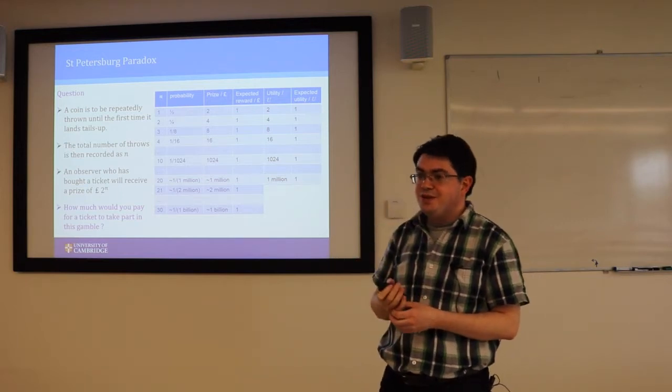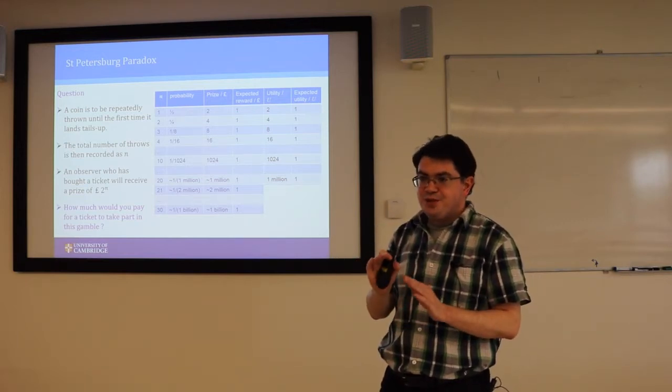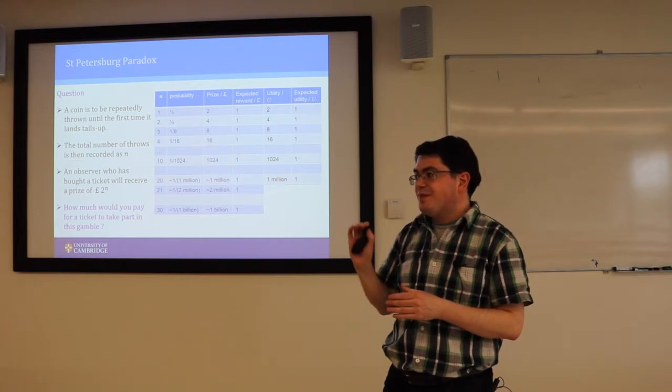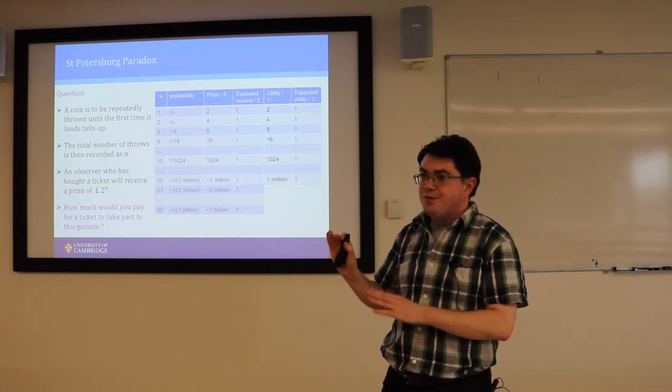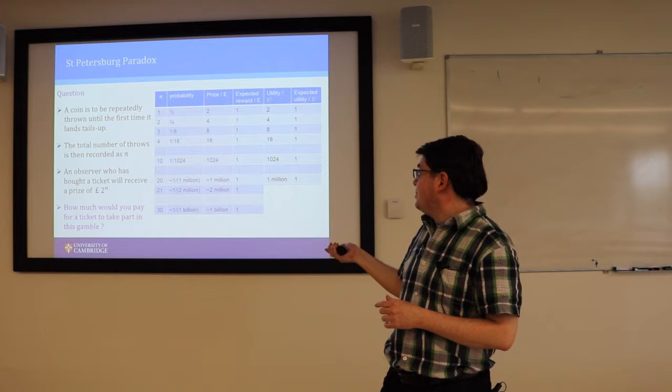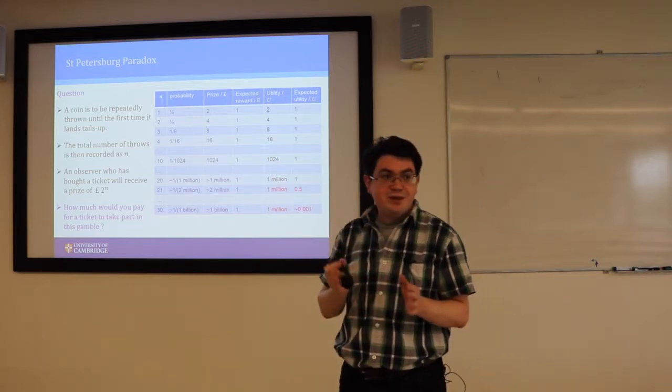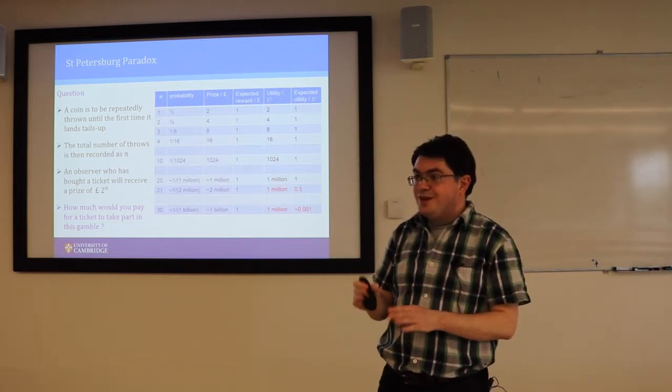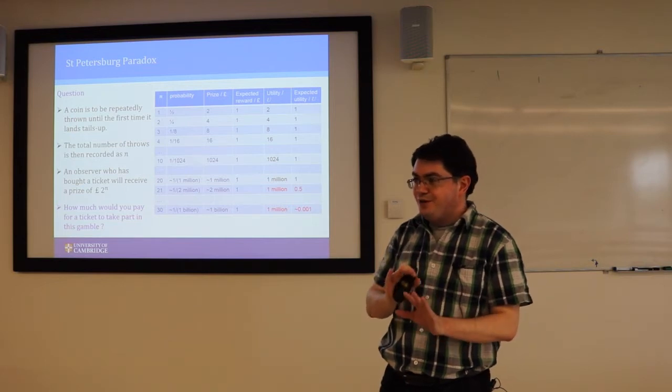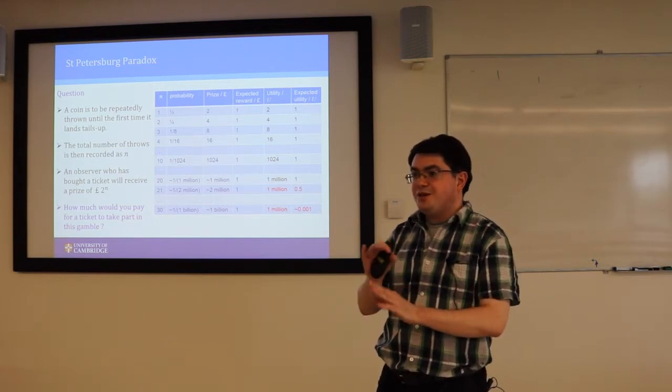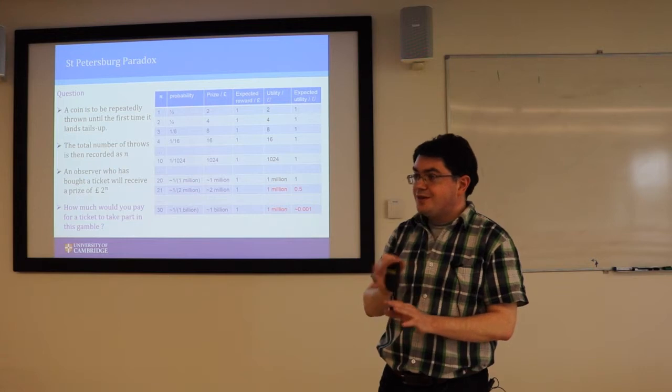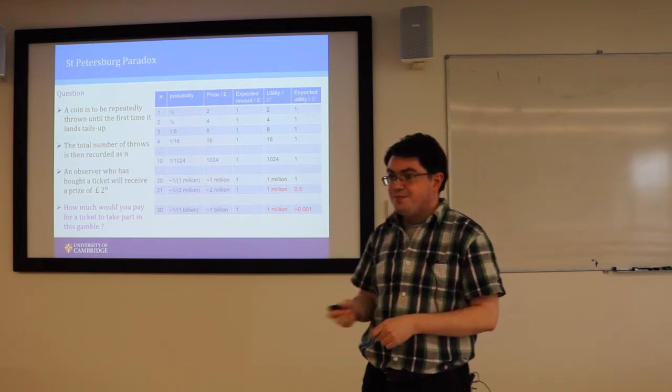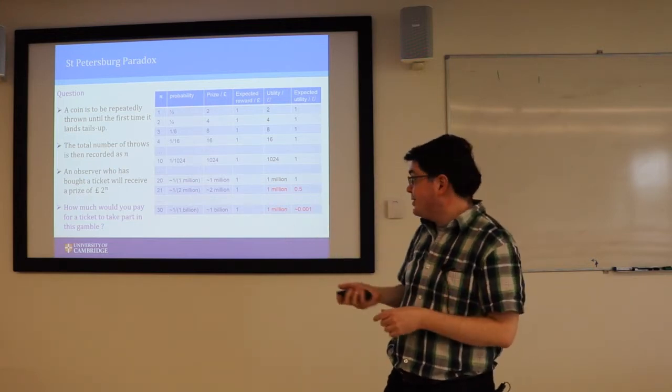But beyond that point, he'll realise his greed has been satiated. And if he receives a prize of more than a million pounds, it's still only worth a million utiles to him, because by this point he can pay off his mortgage and enjoy a lifetime of nice stuff. And so the prize of two million pounds or more is still only worth a million utiles. I'm putting the cutoff at one million for simplicity.